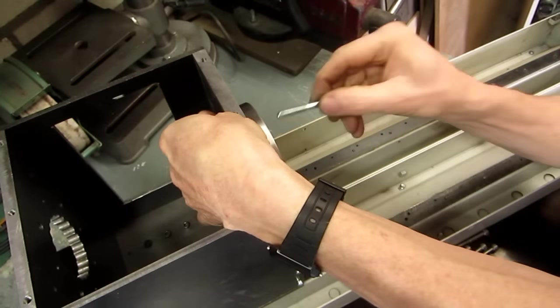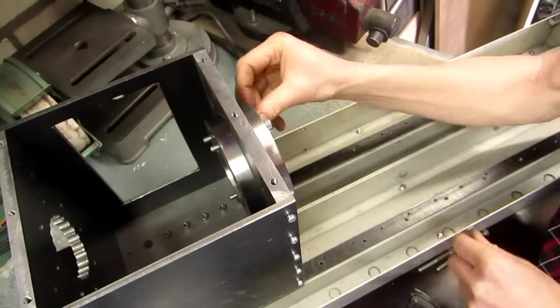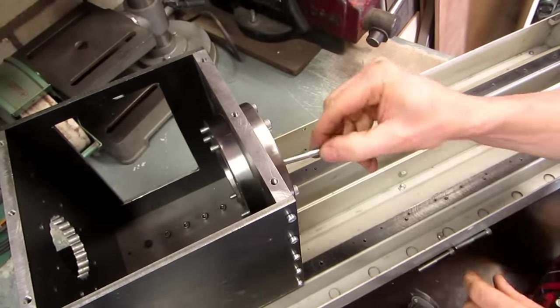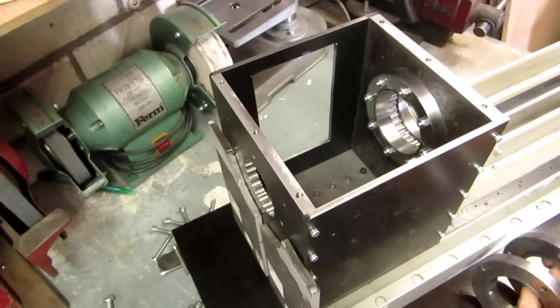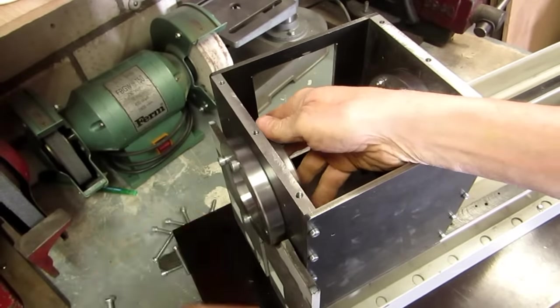Here I mount the tapered roller bearing outer rings to the front plate. It needs to be very secure, so I used 8 bolts. The rear bearing rings take less stress, so 4 bolts are sufficient.